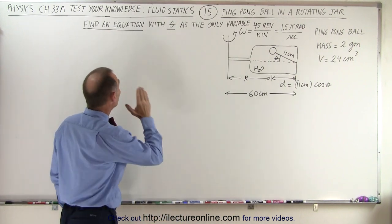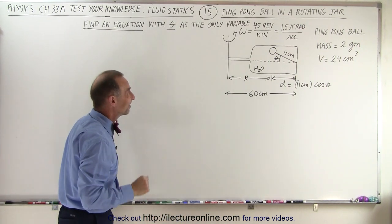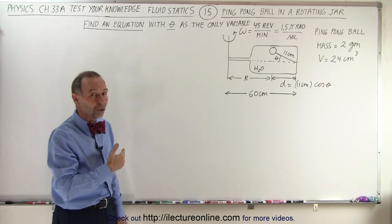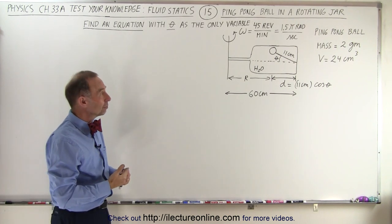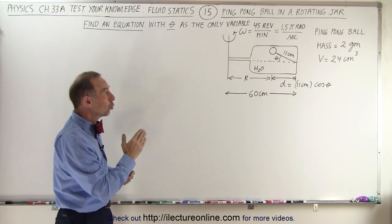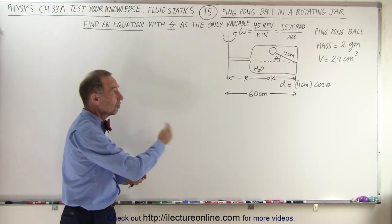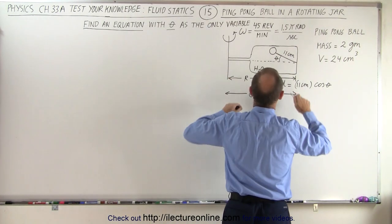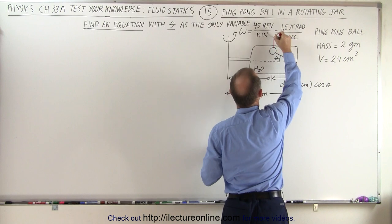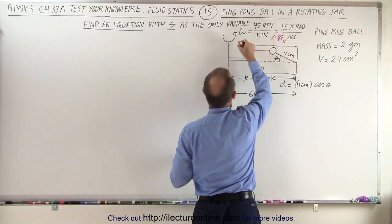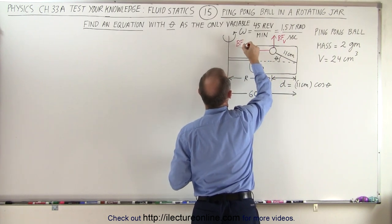We need to come up with an equation where the only variable left is theta. The ping pong ball is going to be experiencing a buoyancy force, not just in the vertical direction, but also in the horizontal direction because of the centripetal motion. So let's draw the two buoyancy forces: the buoyancy force in the vertical direction, BF vertical, and the buoyancy force in the horizontal direction, BFH.